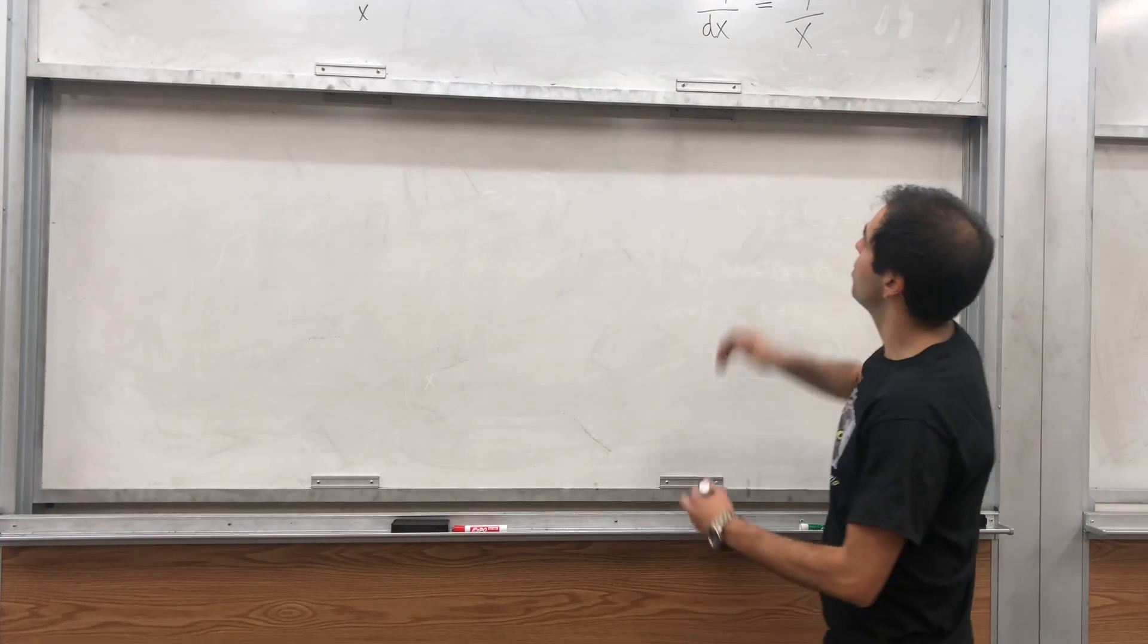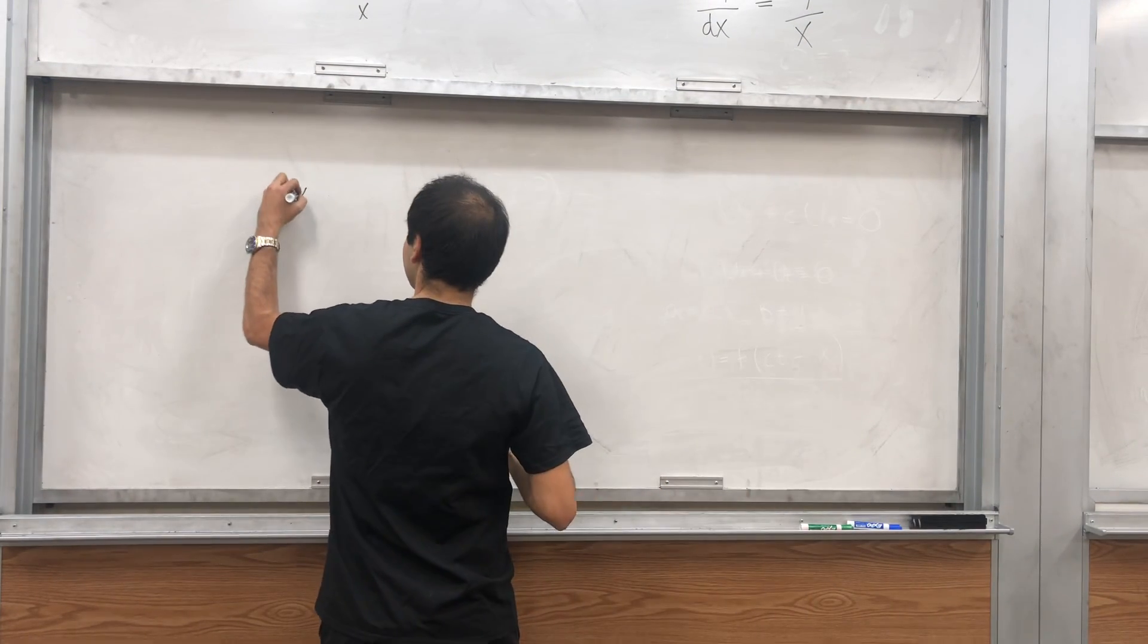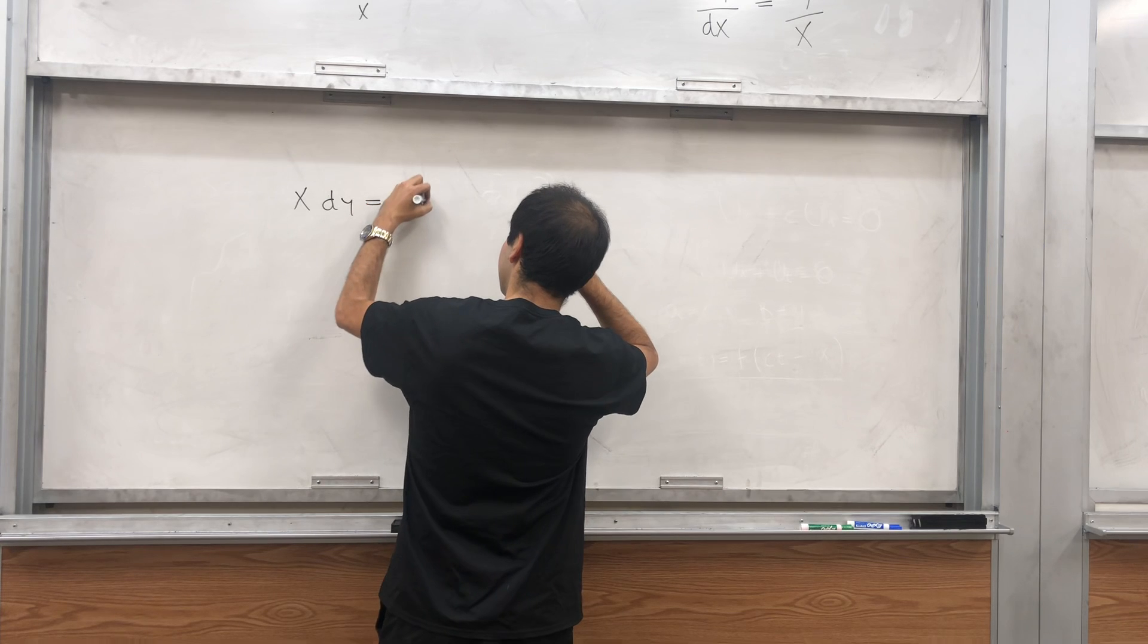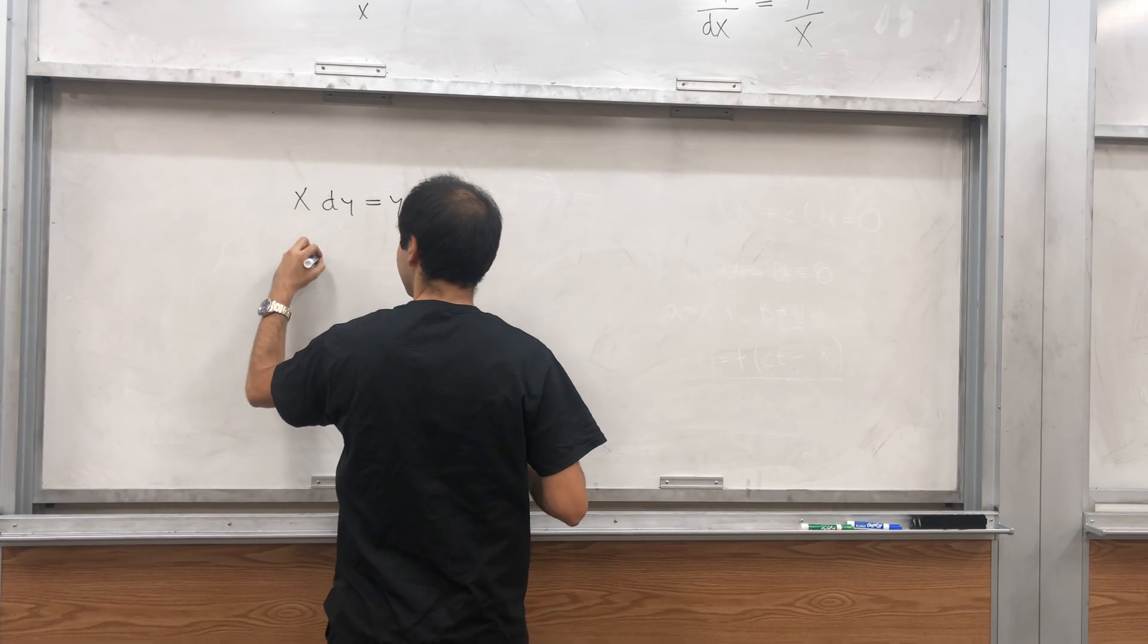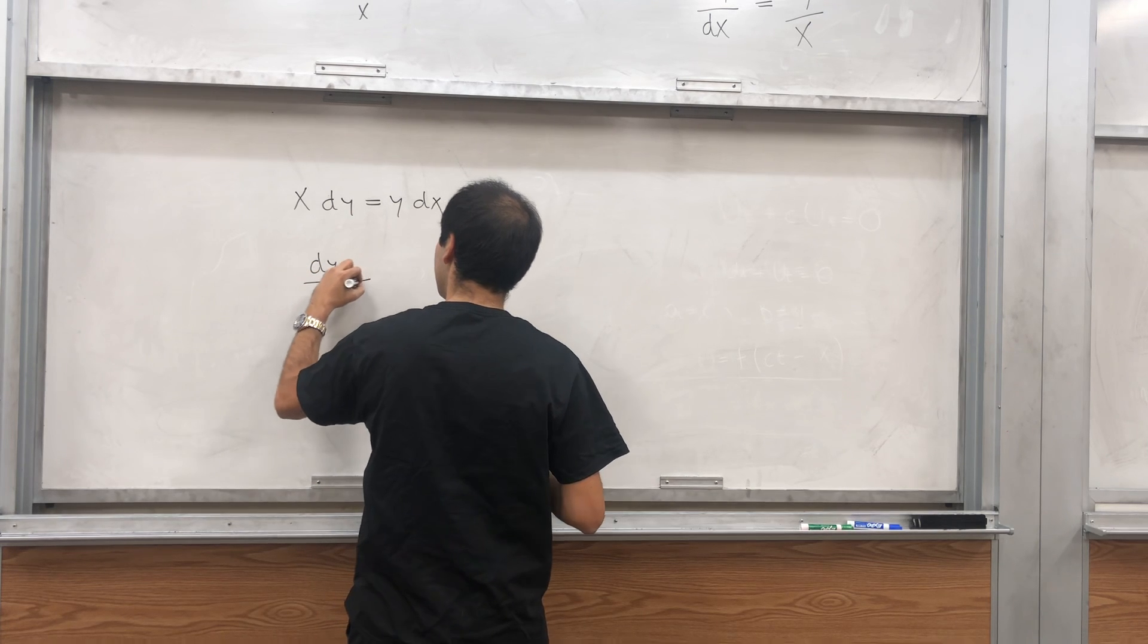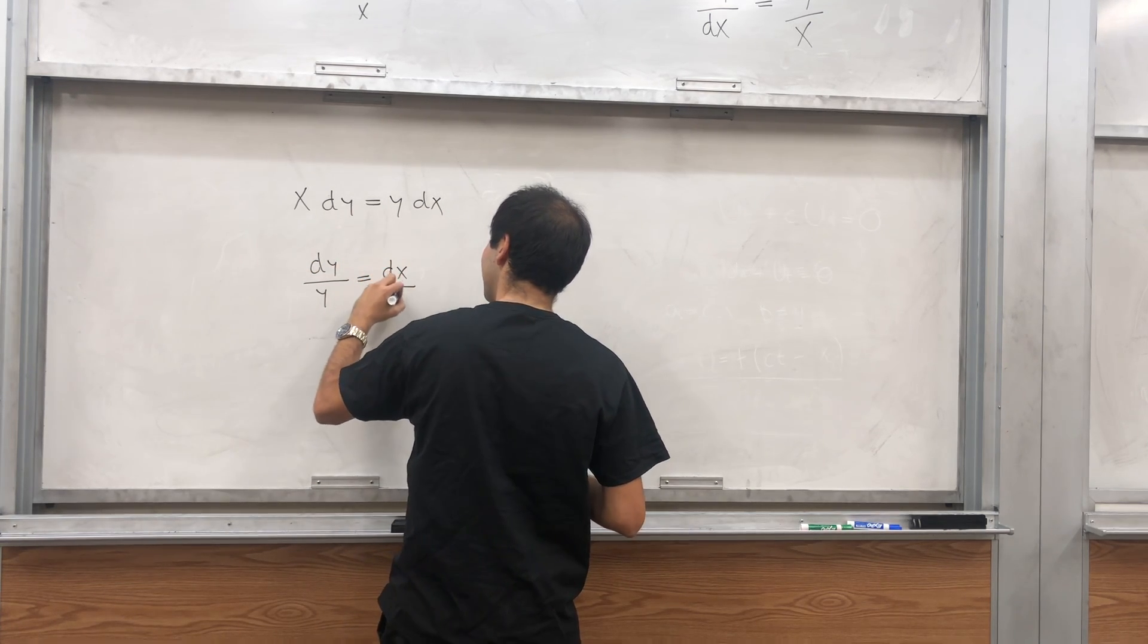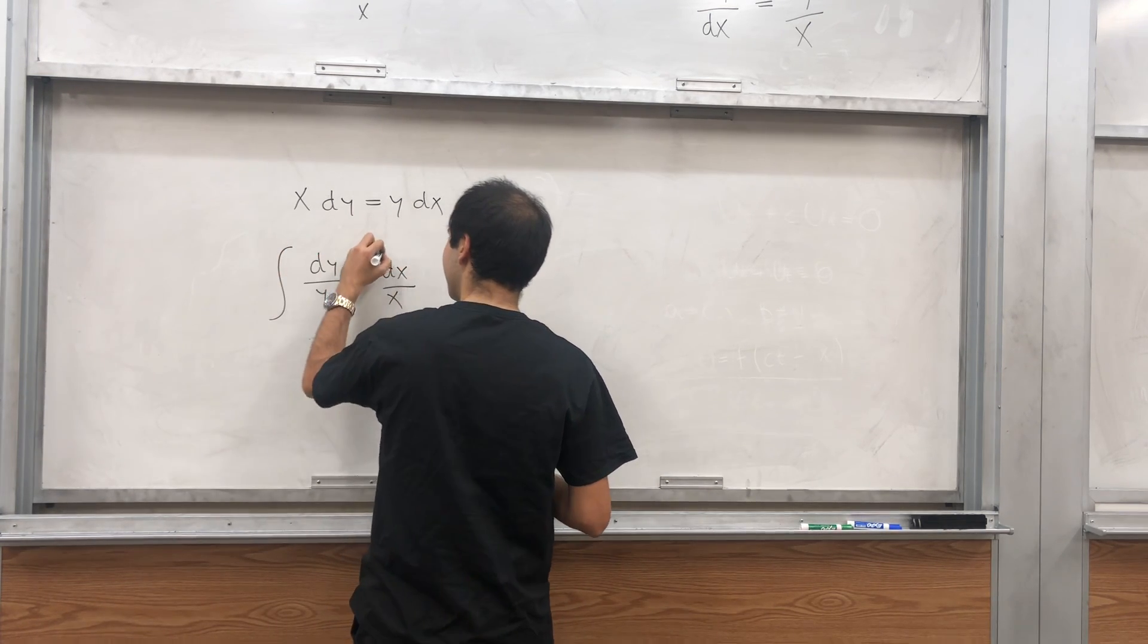So x dy equals y dx. Divide by y here, divide by x. So dy over y equals dx over x. And then integrate.